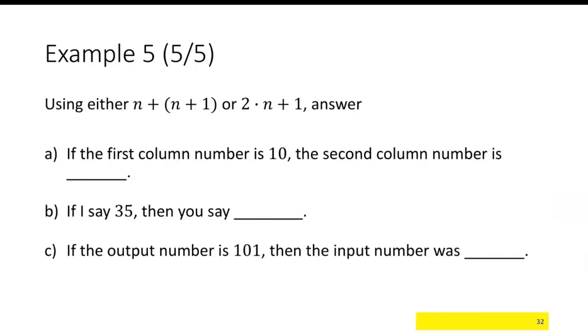So using either n plus n plus 1 or 2 times n plus 1, let's go ahead and answer. If the first column number is 10, the second column number would be, well, I'll go with the first one, 10 plus 11 is 21.